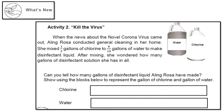Using blocks to represent the gallons, the chlorine is 1/2, so the denominator is 2 — divide the rectangle into 2 parts and shade 1. For the water at 8/10, divide into 10 parts and shade 8. Let's see who can complete this activity.